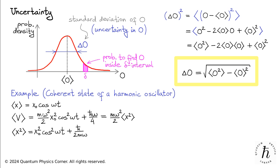We can now calculate the uncertainty in position as the square root of the mean of x squared minus the square of the mean of x. The result turns out to be the square root of h bar over 2 M omega.